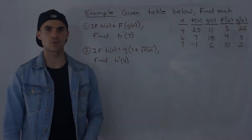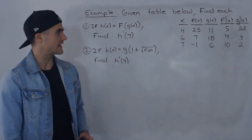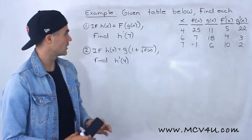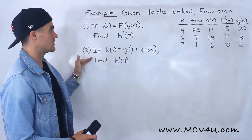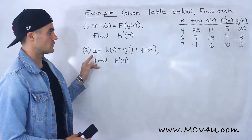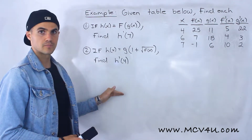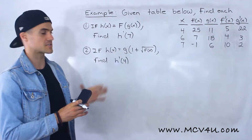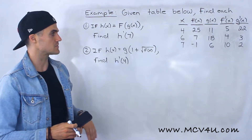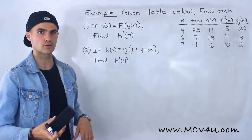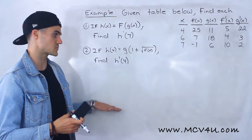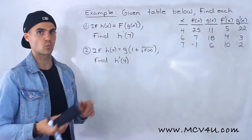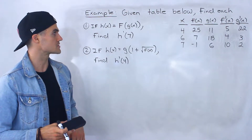What's up everyone, welcome back, Patrick here. Moving on to the next example, given this table over here, we have to find each of these numbers. There are actually four. I was going to do it all in one video, but I decided to split it up into two parts because it's going to take a little while, especially the very last one — the fourth one — which is going to be in the second video. So make sure that you're watching both parts.